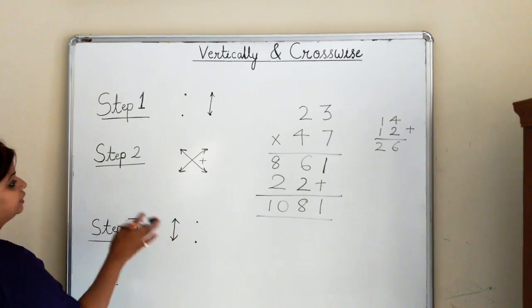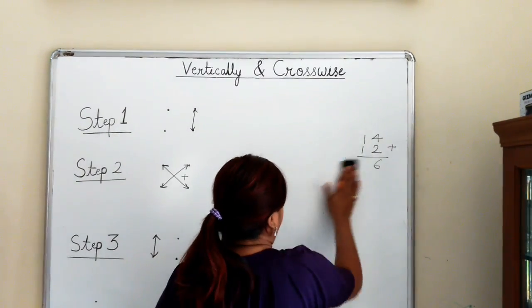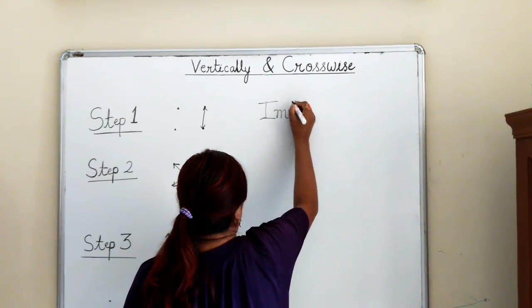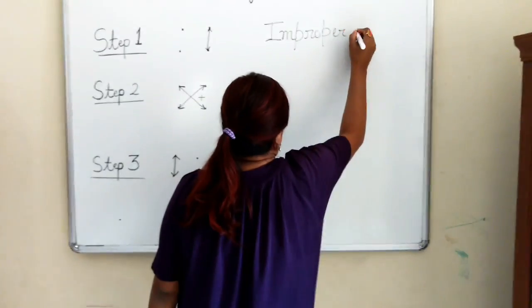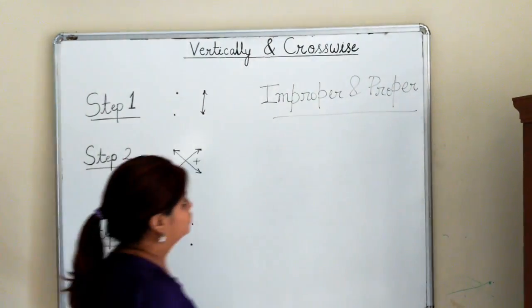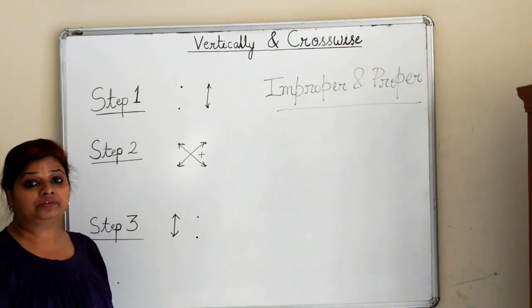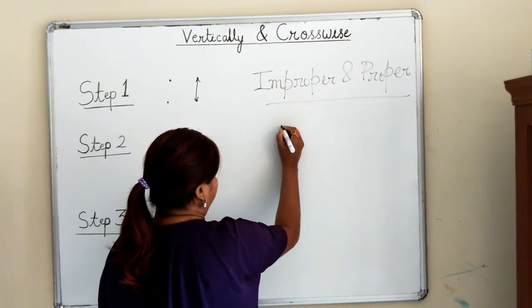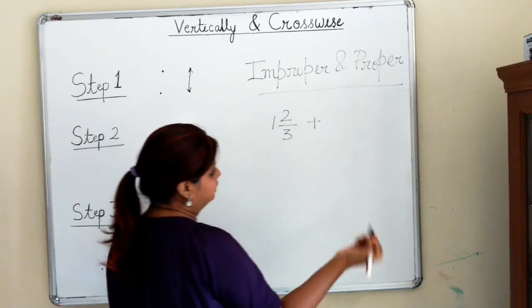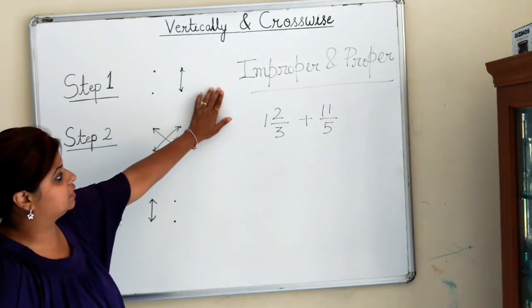Now this same method can be used to add 2 fractions. One thing to remember: the fractions have to be improper or proper. In case you get a mixed number, you convert it. The same method can add 2 fractions without worrying about the LCM. For small kids, LCM is quite tough to get, so this is one easy method to add fractions. I've taken 11/5.